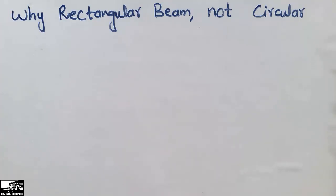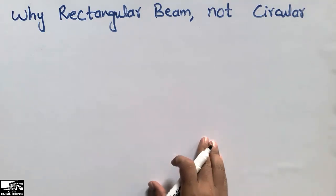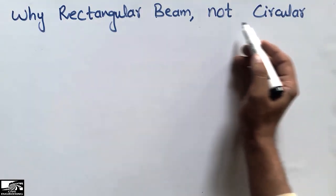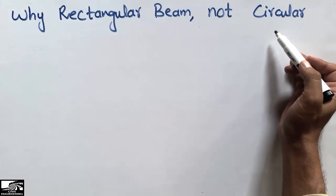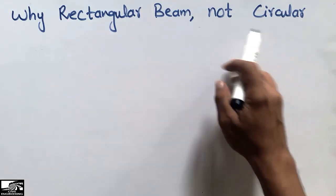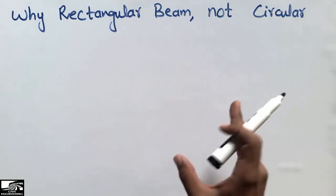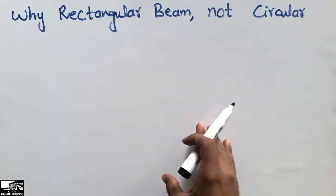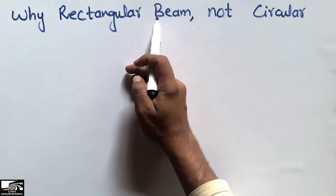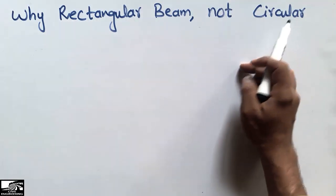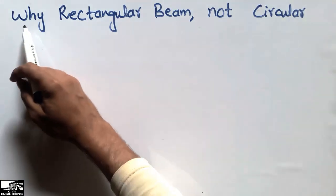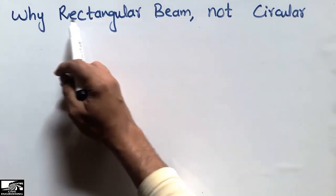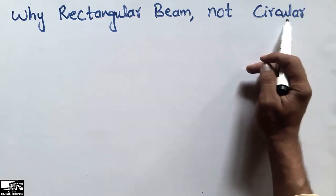Hello guys, welcome back to the C1 Engineering YouTube channel. Please subscribe for daily C1 Engineering videos. Today our lecture is about why we use the rectangular beam and not the circular beam. We also use circular beams in a few cases, but most multi-story buildings and mega projects involve rectangular design beams. I will explain the two major reasons why we choose to design rectangular beams in projects.